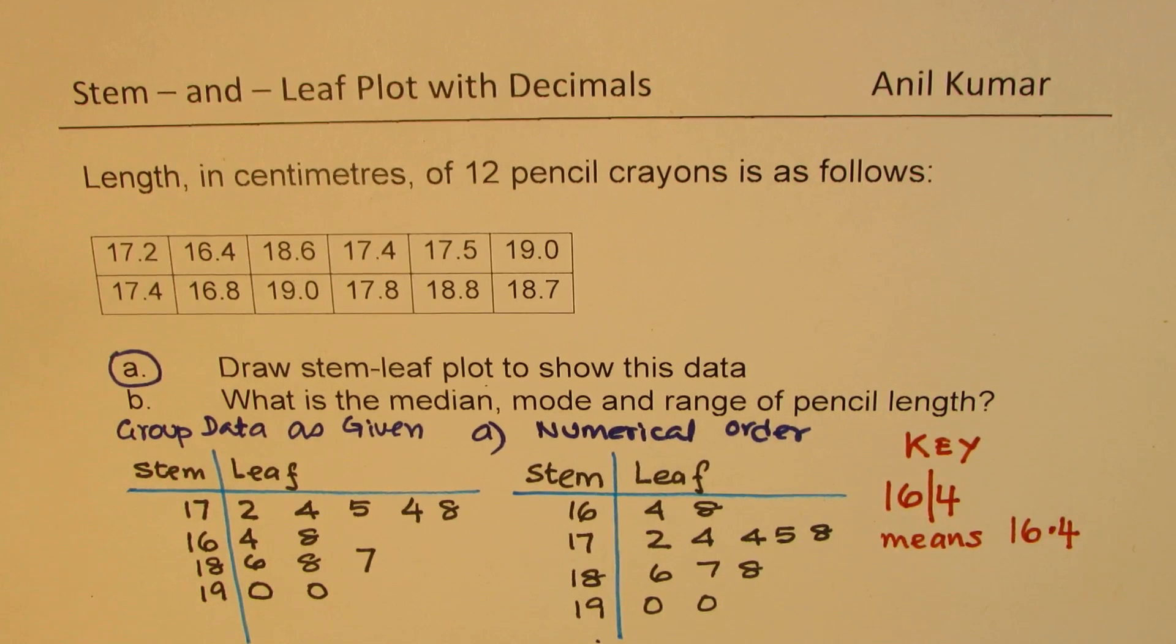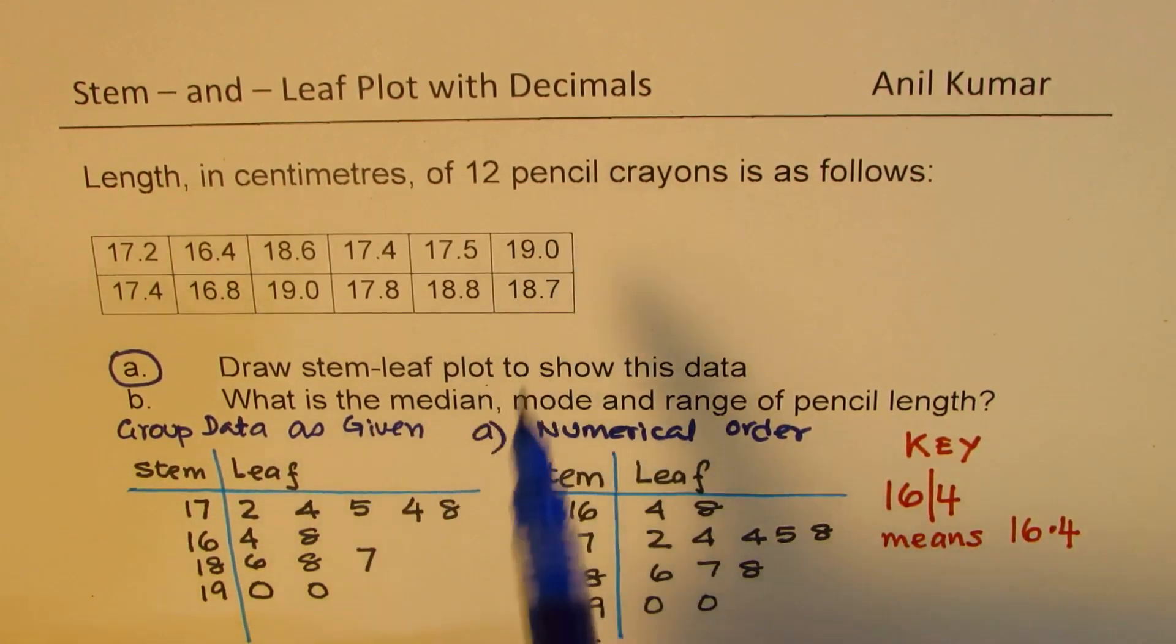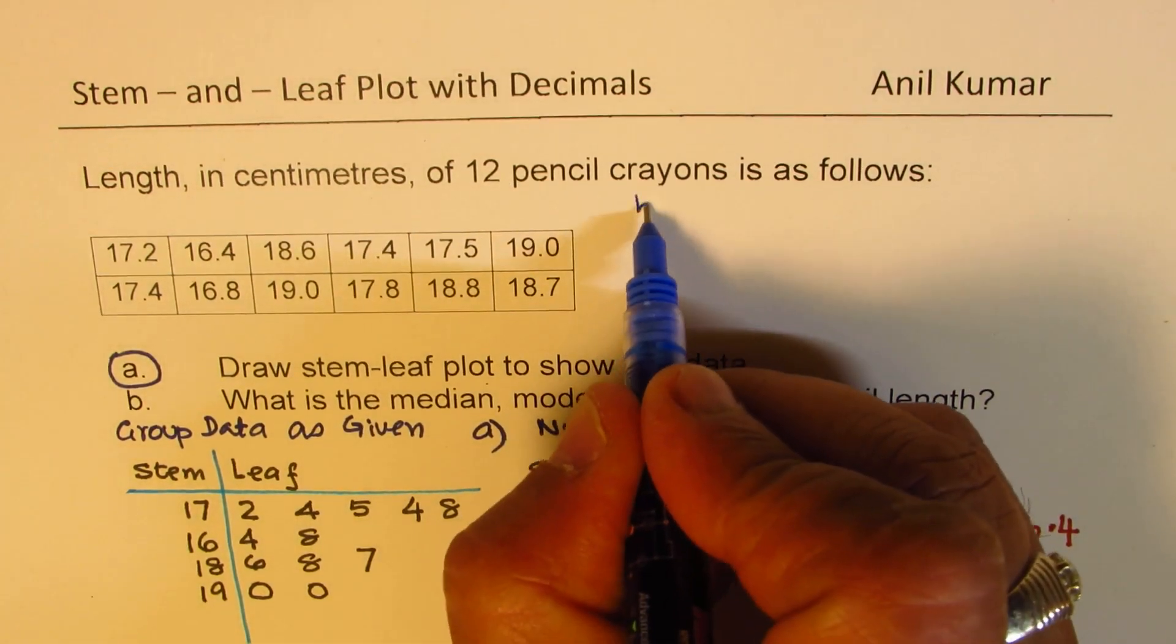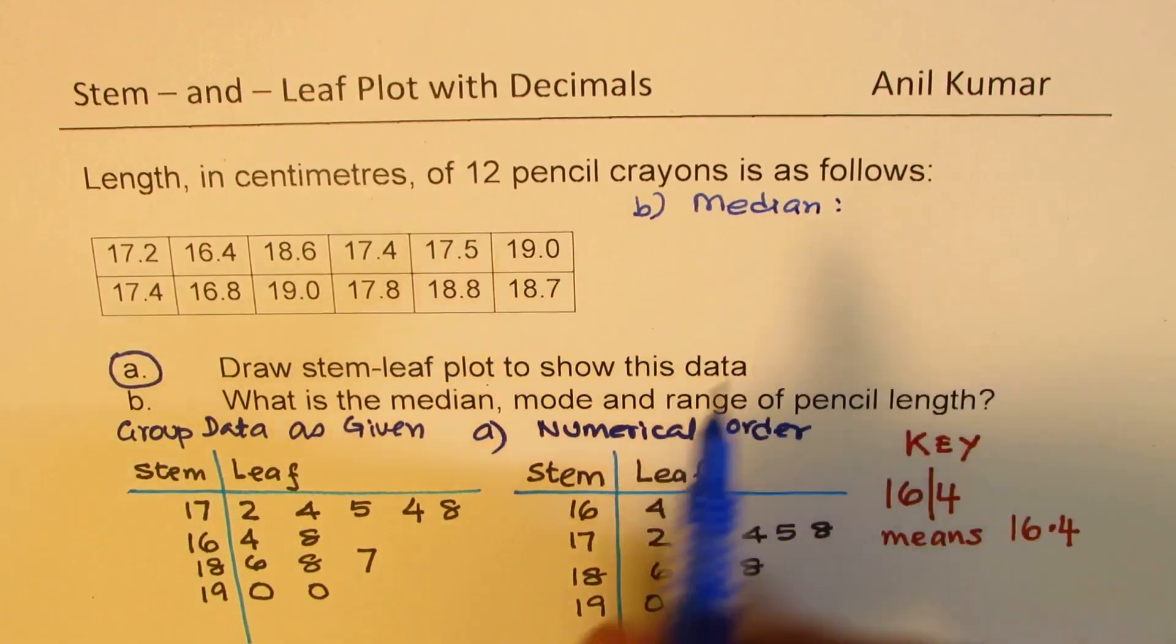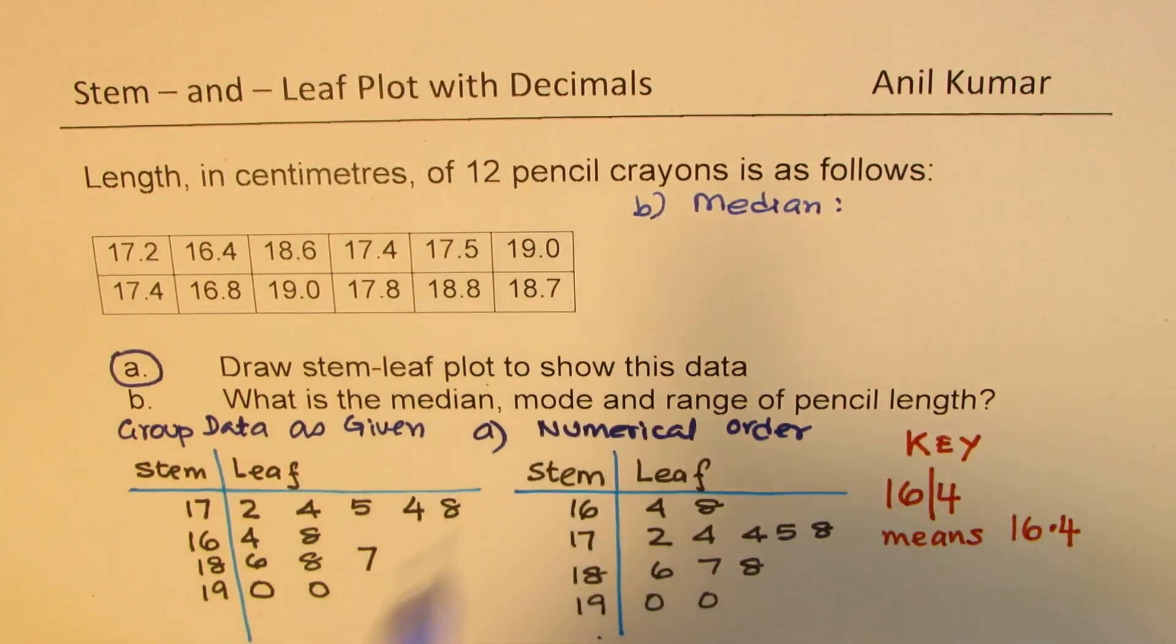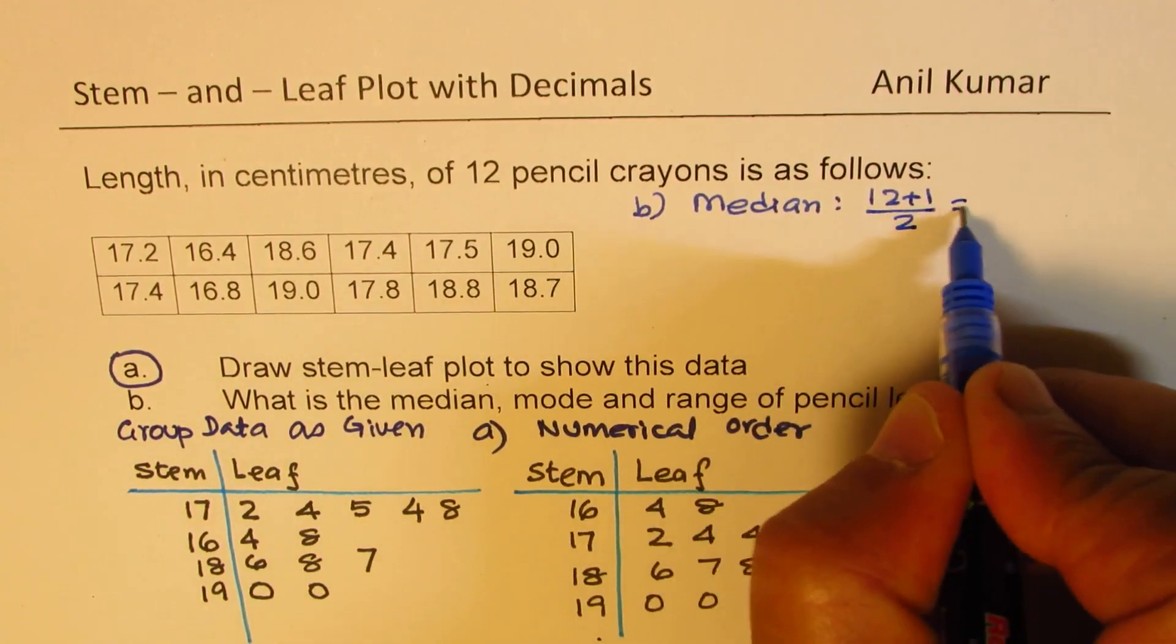Now let's try to answer part (b), which is we need to find what is the median, mode and range of the given pencil lens. So median is the middle value. So let's answer here part (b). We are looking now into median. Since there are 12 pencil crayons, we will add 1 to 12 and then divide by 2.